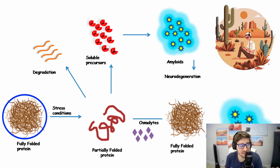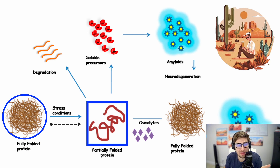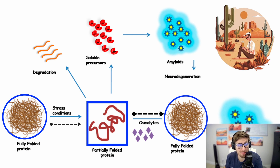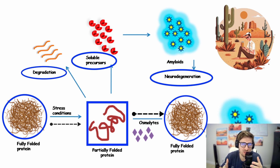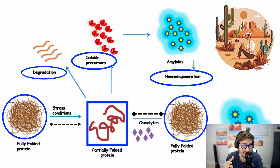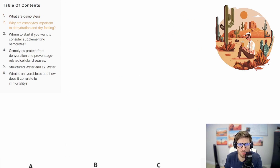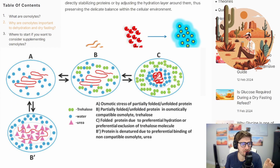You can see that on the left side we have proteins, and that stress conditions partially unfold those proteins, which is bad. As that stress condition increases, if we can get osmolite concentrations to increase in the cells, they fully fold the proteins back. But if we don't have those osmolites, we get degradation, soluble precursors, and things like neurodegeneration and amyloid plaque can appear. If you've ever researched Alzheimer's disease, the amyloid plaque might start ringing a bell — this is probably a very important part of the whole pathology of Alzheimer's.